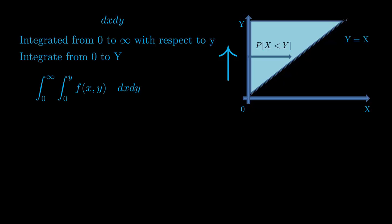Once you have your graph figured out, the tricky part is finding the bounds of integration. If you're integrating in terms of dx dy, your outermost bound is from 0 to infinity with respect to y. To find the inner bound, you integrate from 0 to the function, so my inner integral is from 0 to y. You integrate from 0 to infinity, 0 to y, f of x y dx dy.